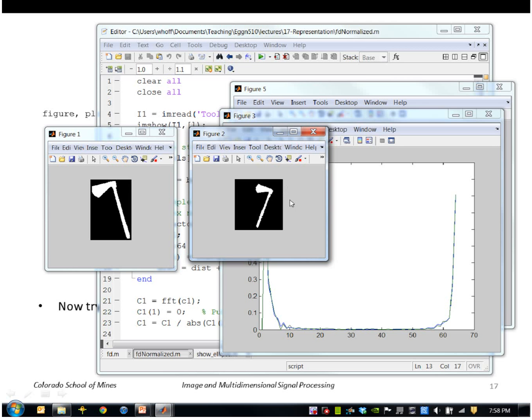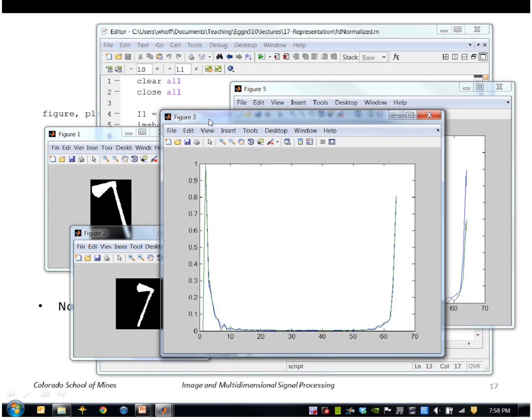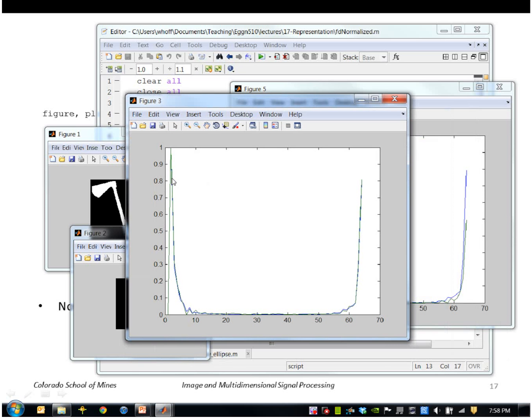I've randomly translated and rotated the image. As you can see here, I've extracted the two Fourier descriptor vectors. And here I'm plotting those two on top of each other, just the magnitudes of each coefficient. So as you can see, they're very similar.